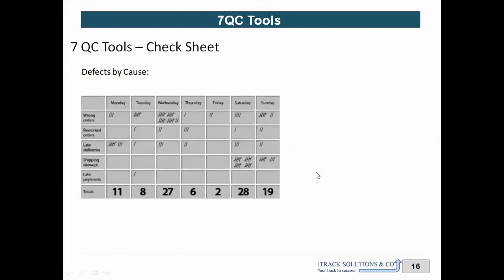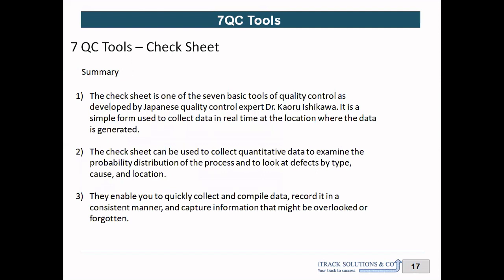The next type of check sheet is defect by cause. In a contact center I get a lot of customer complaint calls. What are these complaint calls about — what is the root cause? Causes include wrong orders, reworked orders, late delivery, shipping damage, late payment, or refunds not credited. A check sheet captures how these calls are distributed across different causes and whether the pattern changes each day of the week — enabling stratified analysis.